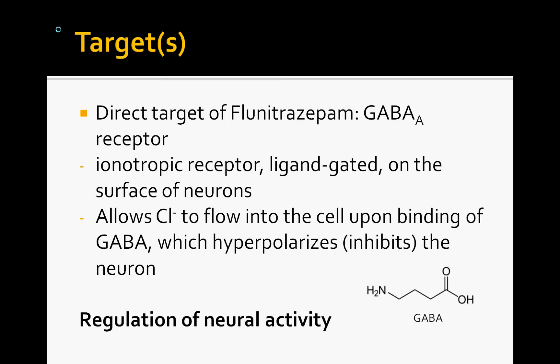The direct action of flunitrazepam is on the GABA-A receptor, an ionotropic ligand-gated receptor, which allows chloride ions to flow into the neuron after GABA binds and opens the pore. This flow of chloride ions hyperpolarizes the neuron, which is inhibitory in nature. So GABA and GABA-A receptors are essentially involved in the regulation of neural activity.